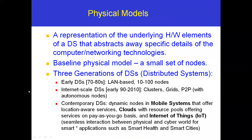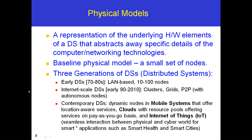The physical model is the first model — the representation of underlying hardware elements of a distributed system that abstracts away specific needs of computer networking technologies. This is the very baseline model. From the distributed system definition, from anywhere we can connect with other nodes with cooperation. The physical model is the very base model, with a very limited number of nodes involved.